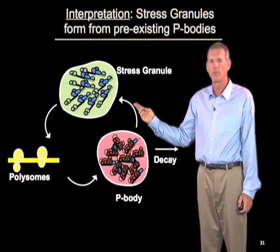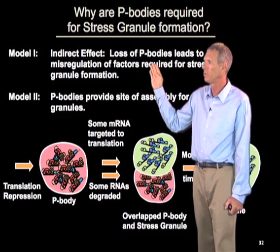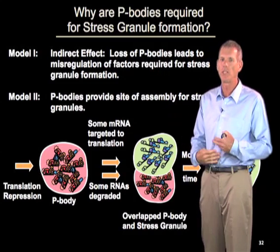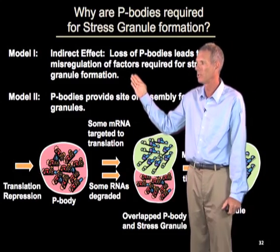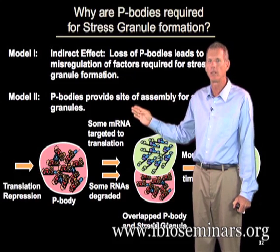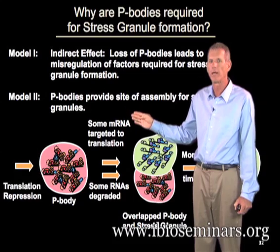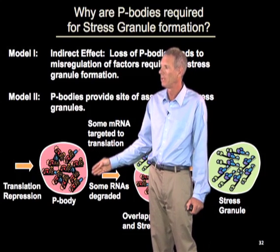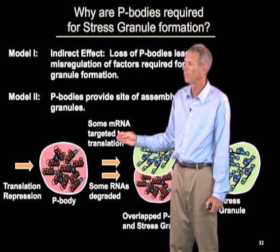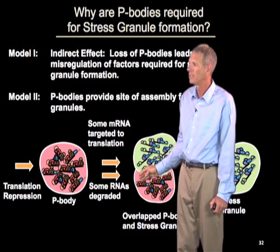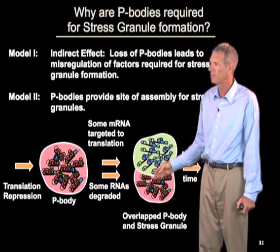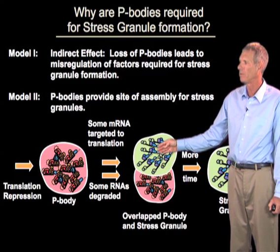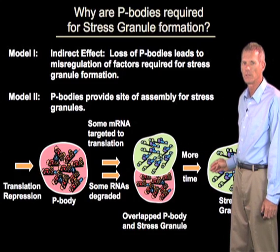Of course there are two possible views of this. One view is that this is an indirect effect — that removing p-bodies causes all kinds of changes in mRNA regulation that change the proteins affecting stress granule formation, so you cannot make stress granules for some indirect reason. The other model is that p-bodies provide an assembly site where, when RNAs stop translating, they first assemble complexes aggregated into p-bodies, and then with time some of those RNAs are targeted for translation, assembling new translation factors, while others are targeted for degradation. At an intermediate time you have overlap, and with more time, RNAs going to re-enter translation become a greater proportion of the total pool.